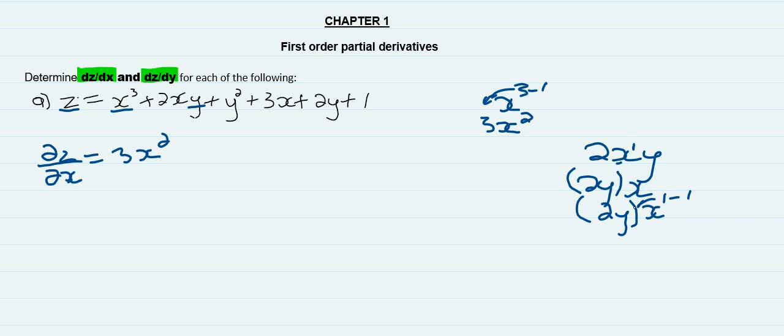So you're left with 2Y times 1. Because that X, that 1 minus 1, and then that 1 when you multiply, you get plus 2Y.